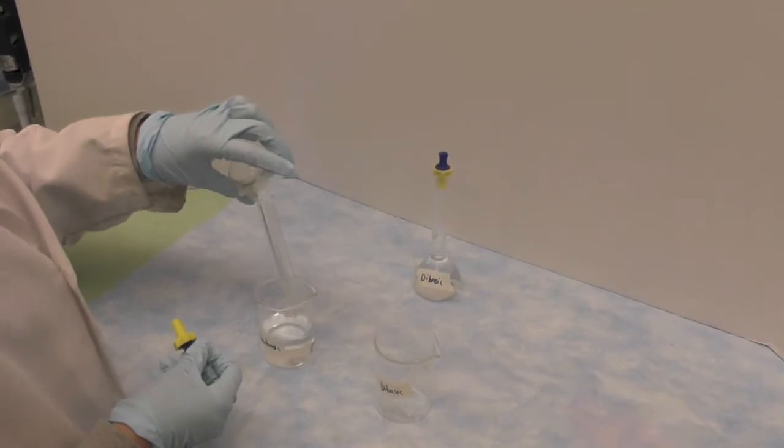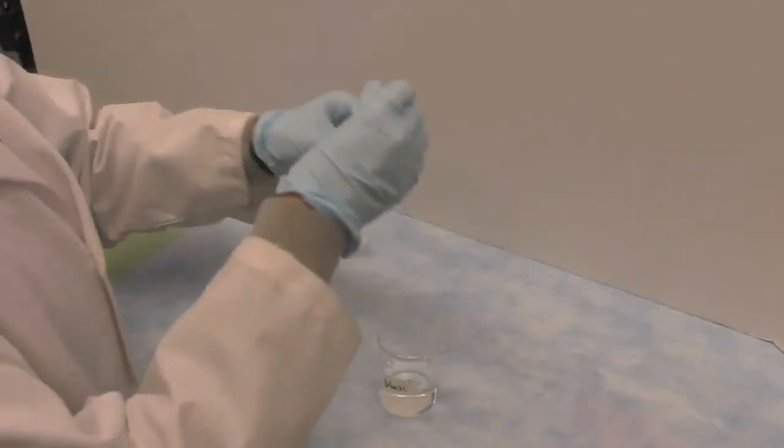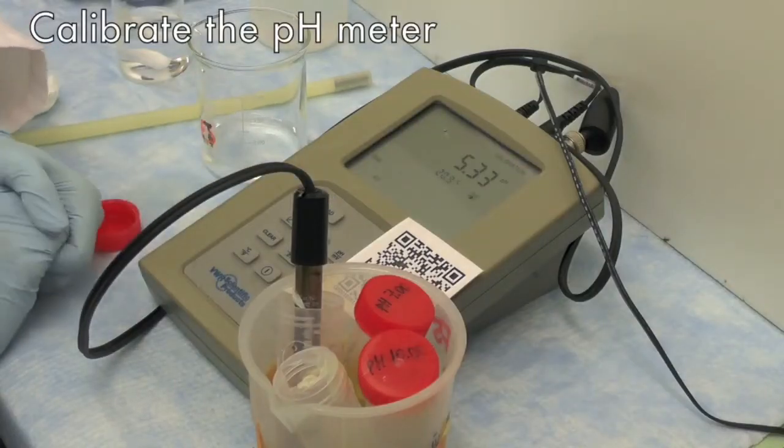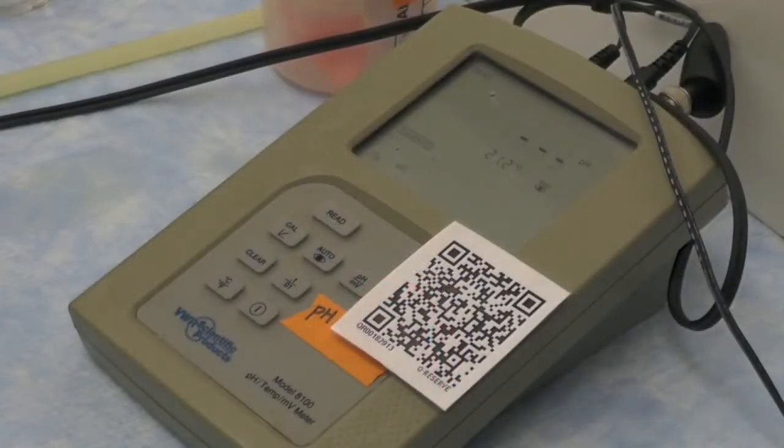This will be your 0.05 molar monobasic phosphate solution and 0.05 molar dibasic phosphate solution. Calibrate the pH meter and measure the pH of each phosphate solution.